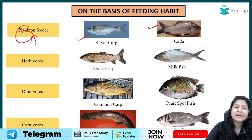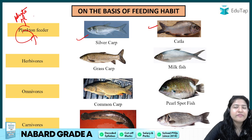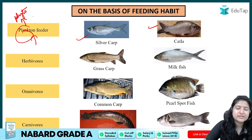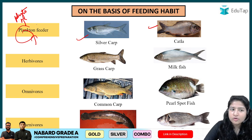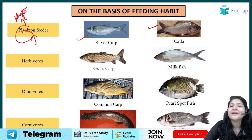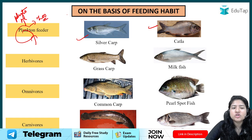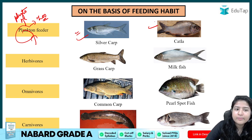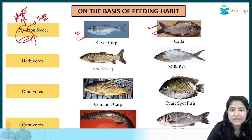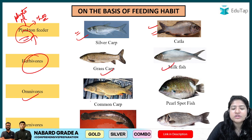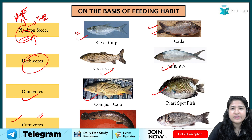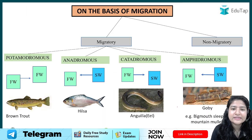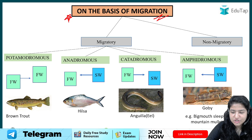Based on feeding habits, we have plankton feeders such as silver carp and catla. Planktons are very small organisms — phytoplanktons can photosynthesize and make their own food, while zooplanktons are animal-like organisms. Silver carp is a phytoplankton feeder and catla is a zooplankton feeder. Herbivores include grass carp and milkfish; omnivores include common carp and bald-spot fish; carnivores that feed on other organisms include snakehead and sea bass.